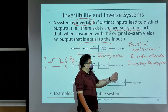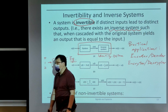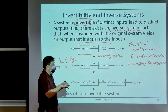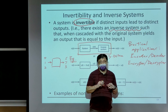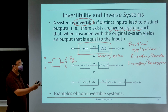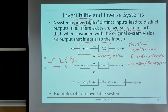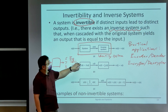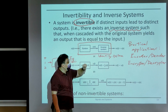For example, when you're purchasing something online, you may insert your credit card number. Your credit card number is encrypted, sent to the other side — let's say a bank or some financial institute — and they will decrypt the message back to your credit card number. So this encryption and decryption operation is also an example of a system and an inverse system.